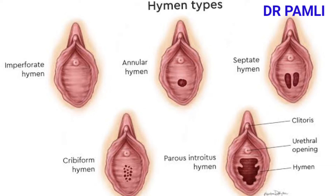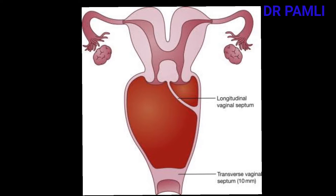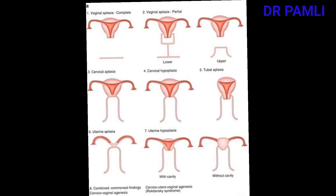The second congenital cause is transverse vaginal septum, due to partitioning of the vagina either transversely or longitudinally, as seen in the diagram. The third is vaginal hypoplasia, a condition whereby the vagina is very small compared to normal size, or can even be completely absent — both of which can cause hematometra.